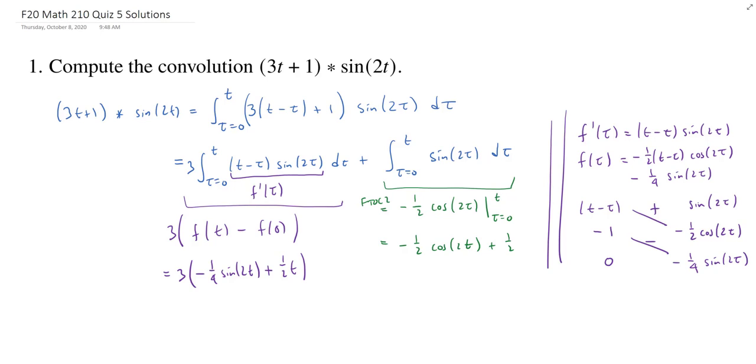So in total, our convolution is going to be, let's see. We have negative 3 fourths sine of 2t. Let's look over here. We have negative 1 half. So minus 1 half cosine of 2t. We have plus a, oh, don't forget the 3 on this one. 3 times 1 half t is plus 3 halves t. And then over here, we have plus 1 half.